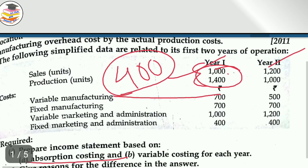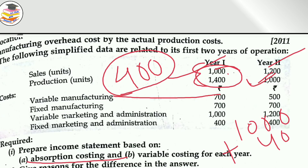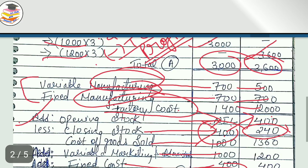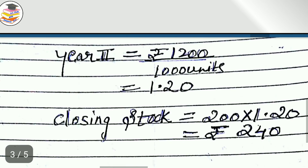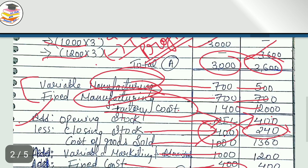For year 2: 1,000 units produced plus 400 units opening stock gives 1,400 units available. Sales are 1,200 units, so closing stock is 200 units. Year 2 factory cost is Rs. 1,200.